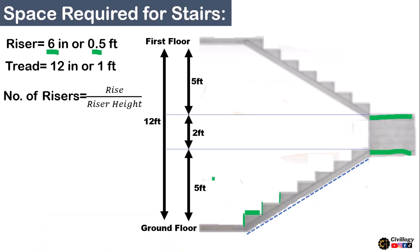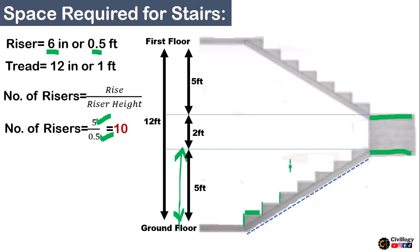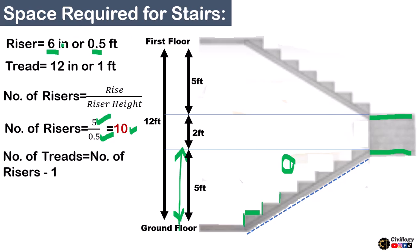The rise is the actual vertical height. By putting the values — rise is 5 feet and riser height is 0.5 feet — we get the number of risers equal to 10. We are calculating for flight number 1. To calculate the number of treads, we use the formula: number of risers minus 1. So 10 minus 1 equals 9. In flight number 1, there are 10 number of risers and 9 number of treads. Note that the last tread is not counted as it is part of the landing.